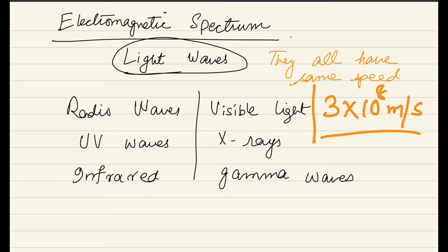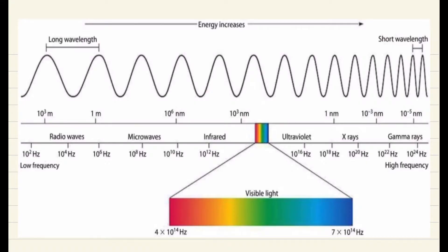So in simple words, electromagnetic radiations are the light waves. But in the electromagnetic spectrum, we have different types of light waves that vary depending on their frequency and wavelengths.